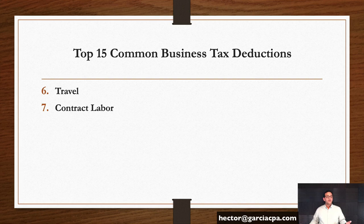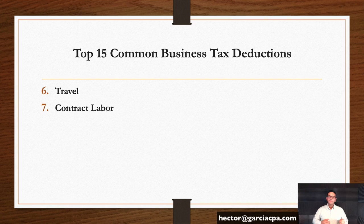Contract labor: if you pay a person to help you run your business — because you couldn't have an employee yet, or as additional casual labor on top of your employees — that will be deductible. But you must document the contract labor costs by giving that contractor a 1099 form. This is a really important part of it.